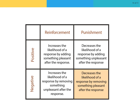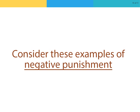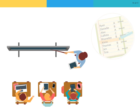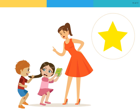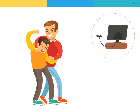Negative punishment decreases the likelihood of a response by removing something pleasant after the response. Examples include: a student who copies answers from another student's test, so his teacher removes his test score from his total grade; a child who pulls a girl's hair in class, so his teacher does not reward him with good behavior points which could have earned him a prize; and an older brother who picks on his younger brother, so his parents take away his favorite video game.